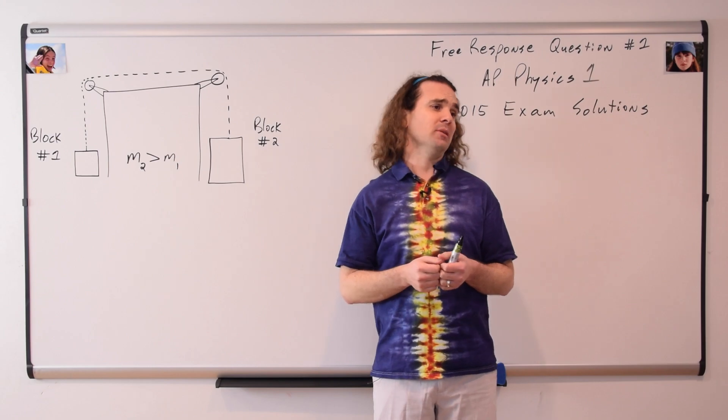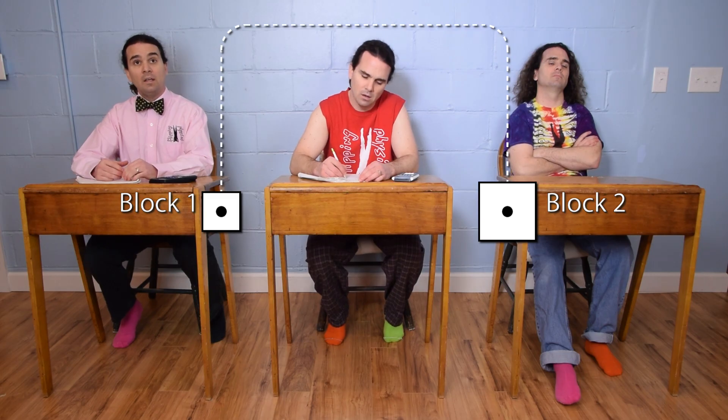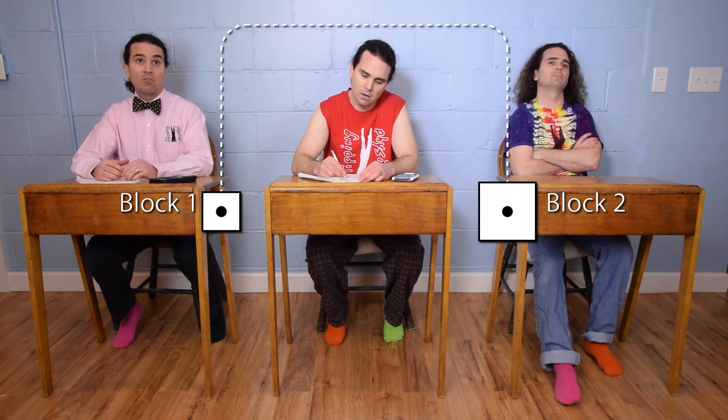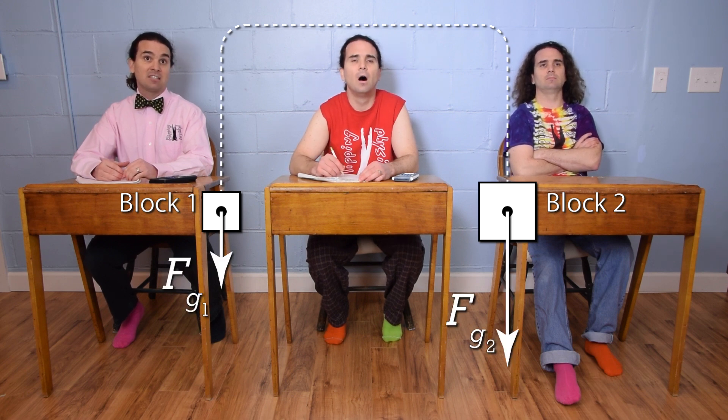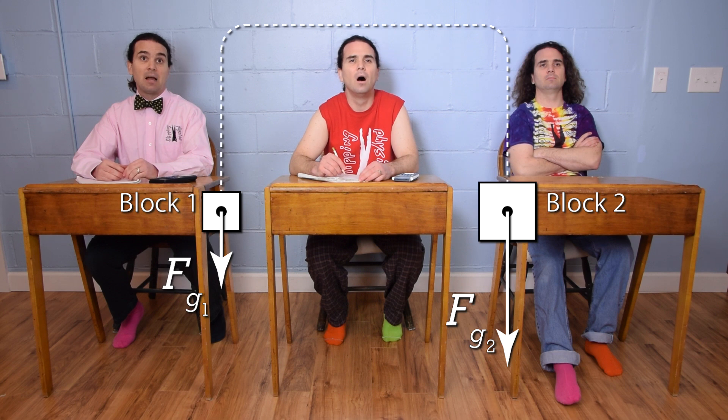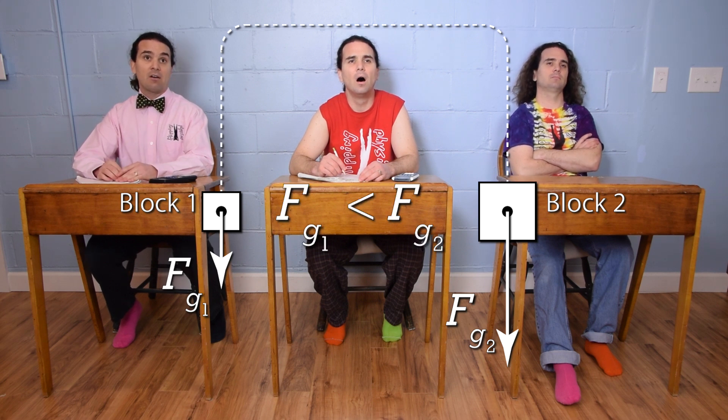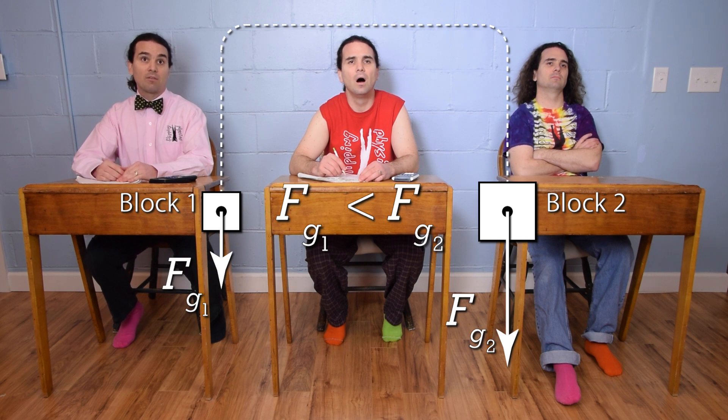Billy, could you start please? Well, each block has a force of gravity acting downwards on it. And the mass of block two is greater than the mass of block one. So the length of the arrow for the force of gravity acting on block two should be longer than the length of the arrow for the force of gravity acting on block one.